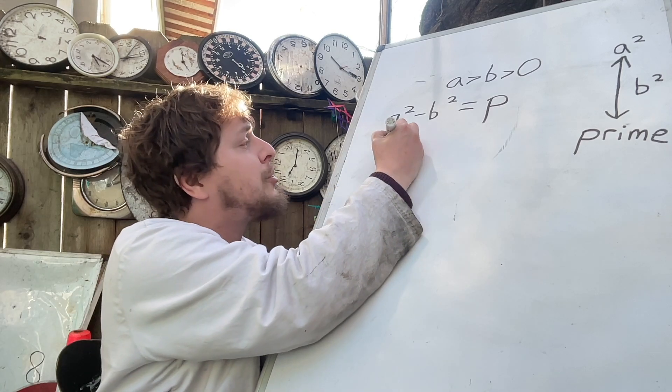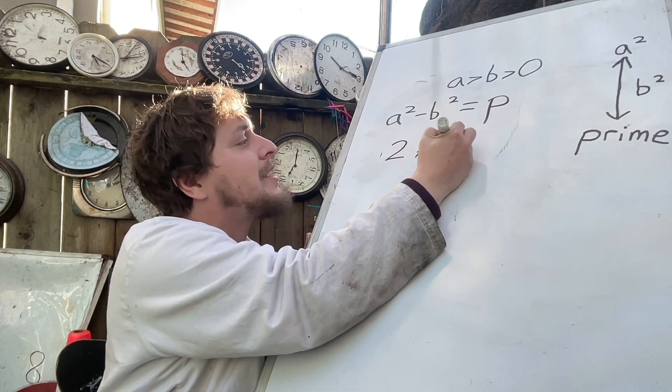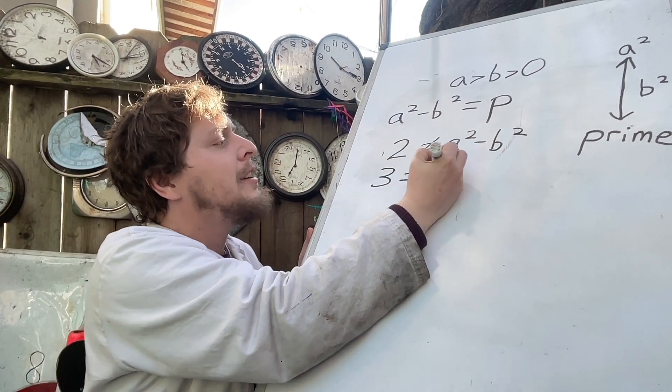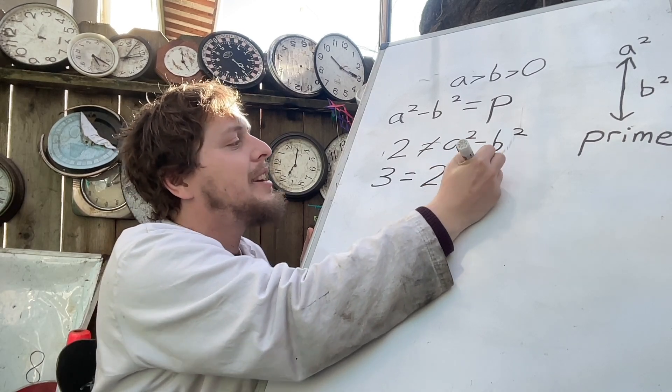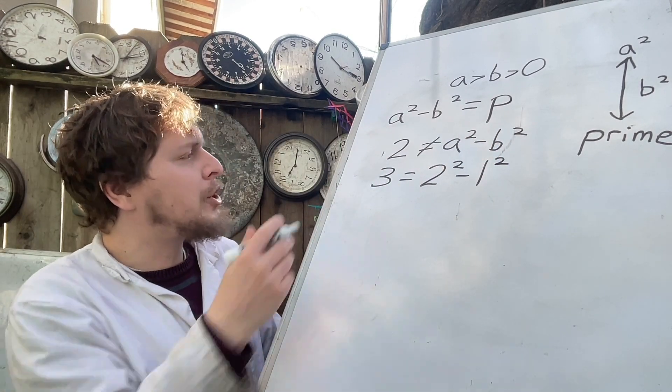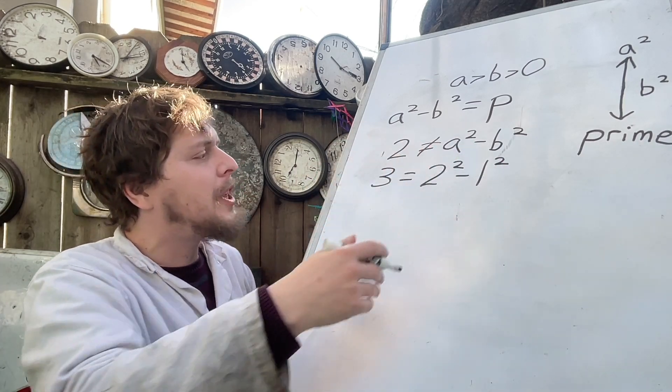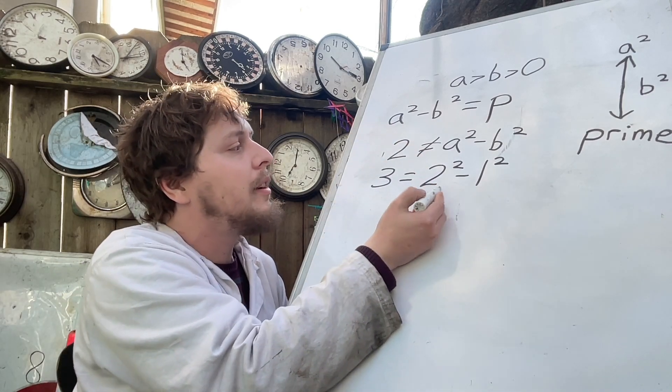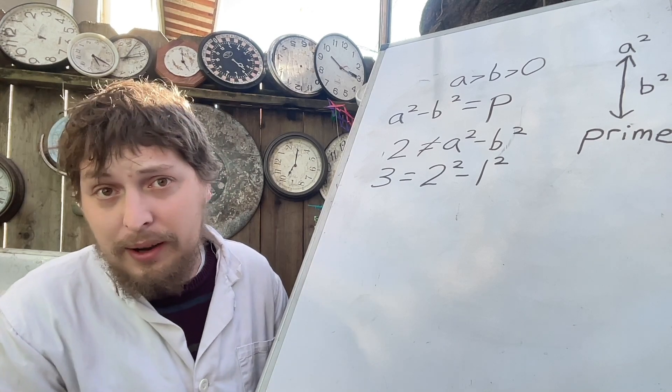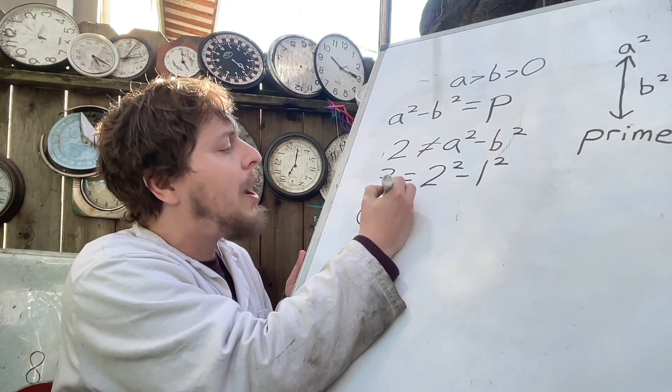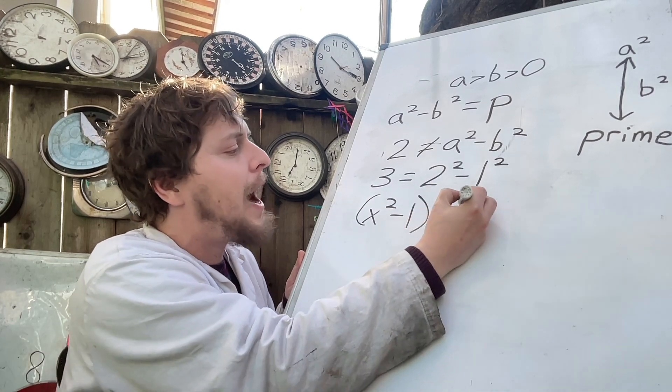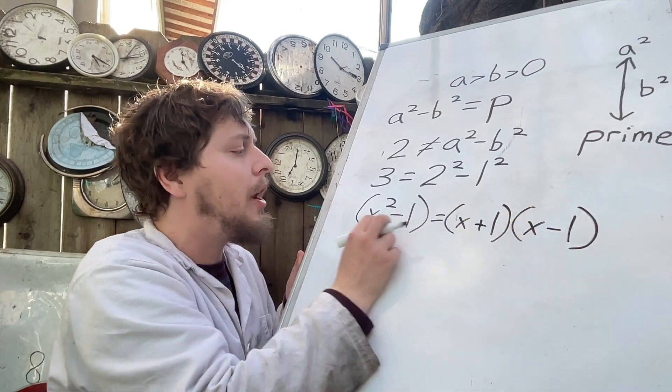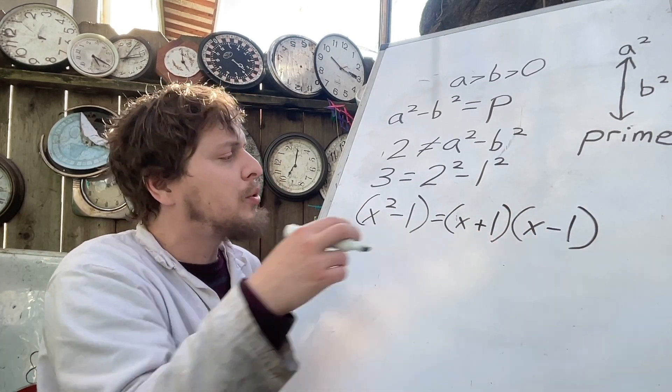We'll find that 2 cannot be expressed as a difference of square numbers. However, 3 can. It's 2 squared minus 1 squared. So which primes can do this? And which squares help them do this? Well, let's note that 3 here is an example of something being just 1 less than a square number. And if something is ever 1 less than a square number, that can be factored as x plus 1 times x minus 1 for whatever the root of that square was.